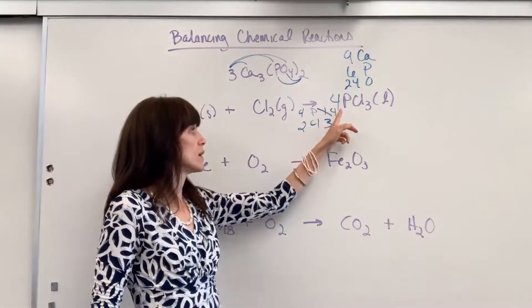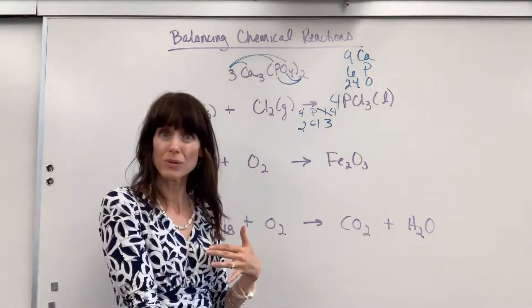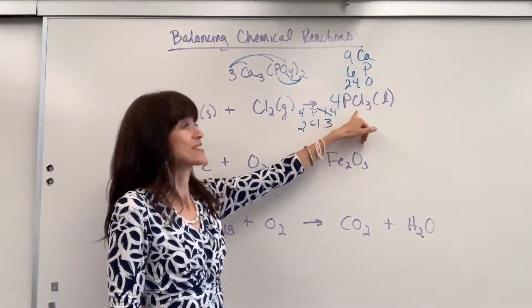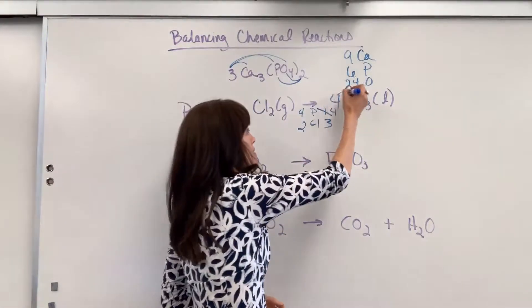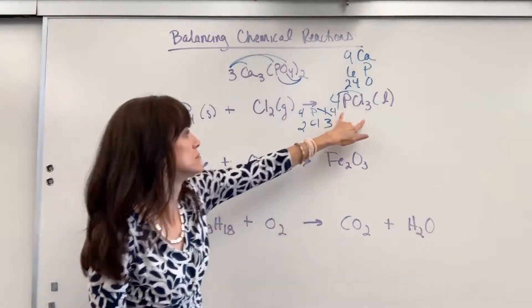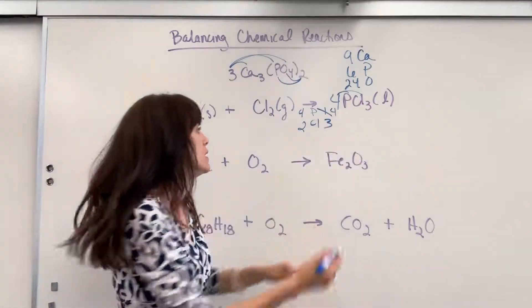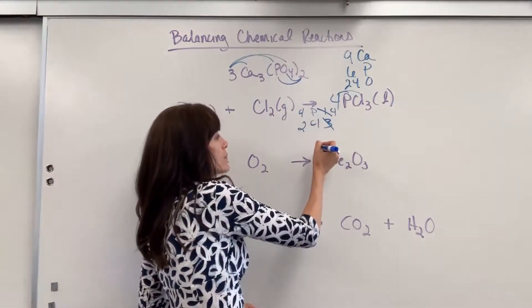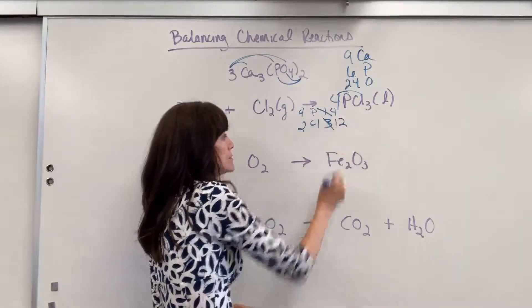Well, when we did the four molar coefficient, remember that distributes. That goes to both the phosphorus and the chlorine like this. So how many chlorine do I have? 12. So we're going to cancel out that three and put 12.